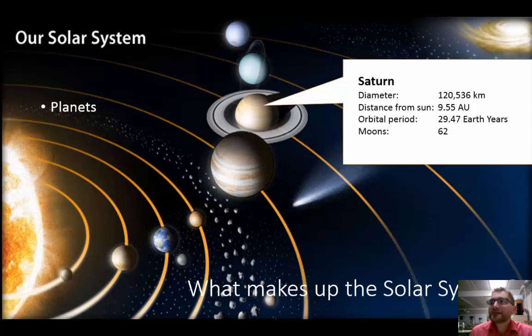The next planet is Saturn. Its diameter is 120,536 kilometers. It's 9.55 astronomical units from the sun. Its orbital period is 29.47 Earth years and it has 62 moons.